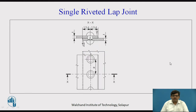Now moving further with riveted joints. The first one is single riveted lap joint. In a lap joint, one plate is placed over the other — one sheet metal is placed over the other. The rivet is inserted and then pressure is applied. Riveting is done with the help of manual hammering or with a pressurized tool, selected depending on the application and required reliability. In single riveted, the rivets are in a single line, and lap joint because the two plates are one above the other.